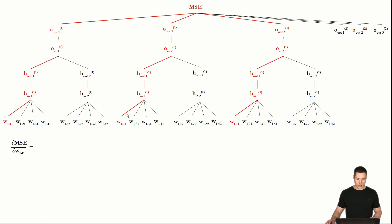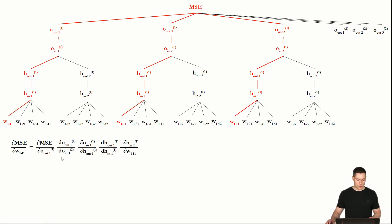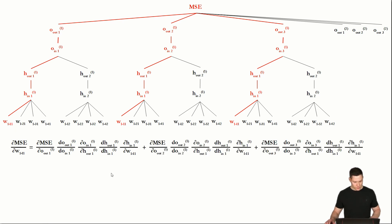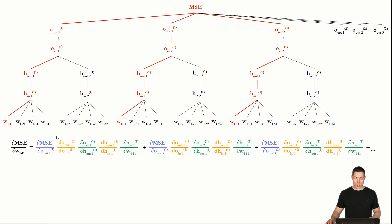To determine this partial derivative, we have to consider three paths. For the first path, the partial derivatives look like this: the partial derivative of the mean squared error with respect to O_out_1, multiplied by the derivative of O_out_1, then multiplied by the partial derivative of O_in_1 with respect to H_out_1, then the derivative of H_out_1, and finally the partial derivative of H_in_1 with respect to weight 1,1. We can write out the two other paths in a similar way. There's nothing really new here — the blue terms are derivatives of the cost function, the orange ones are derivatives of the sigmoid function, and the green ones are derivatives of the dot product.